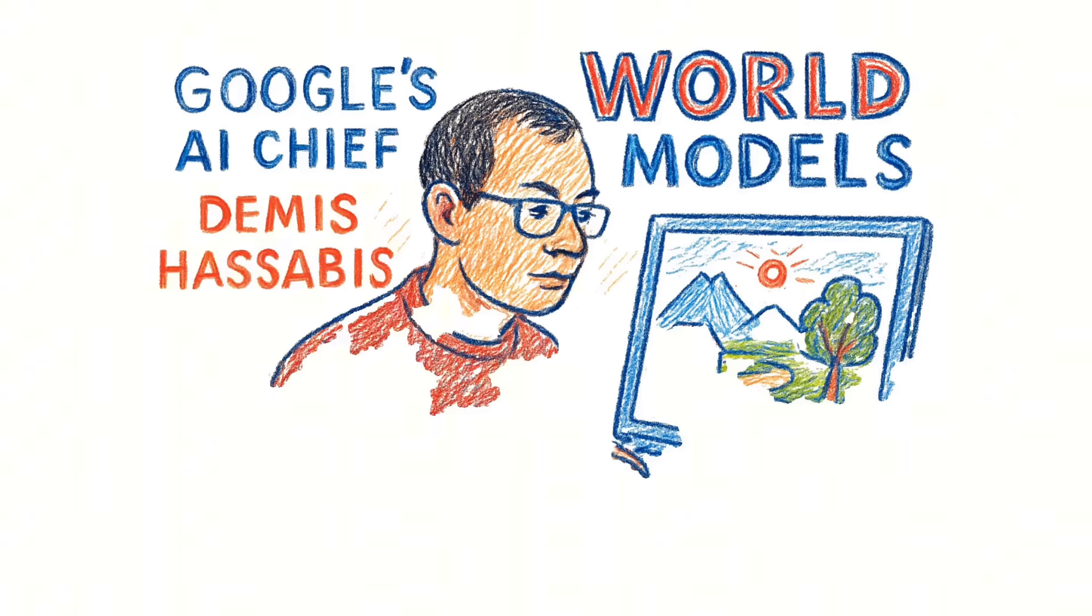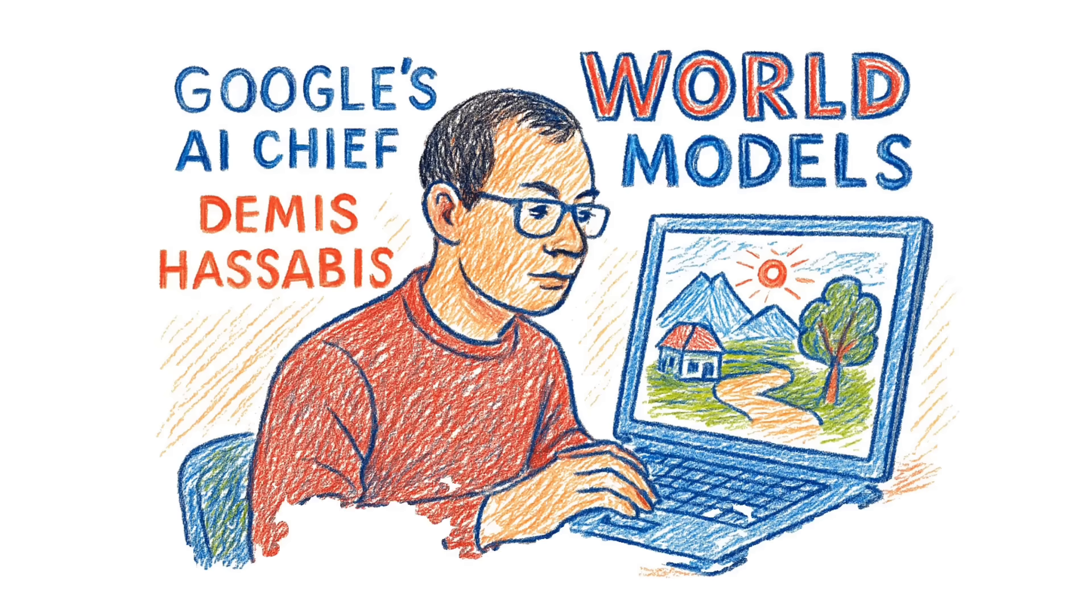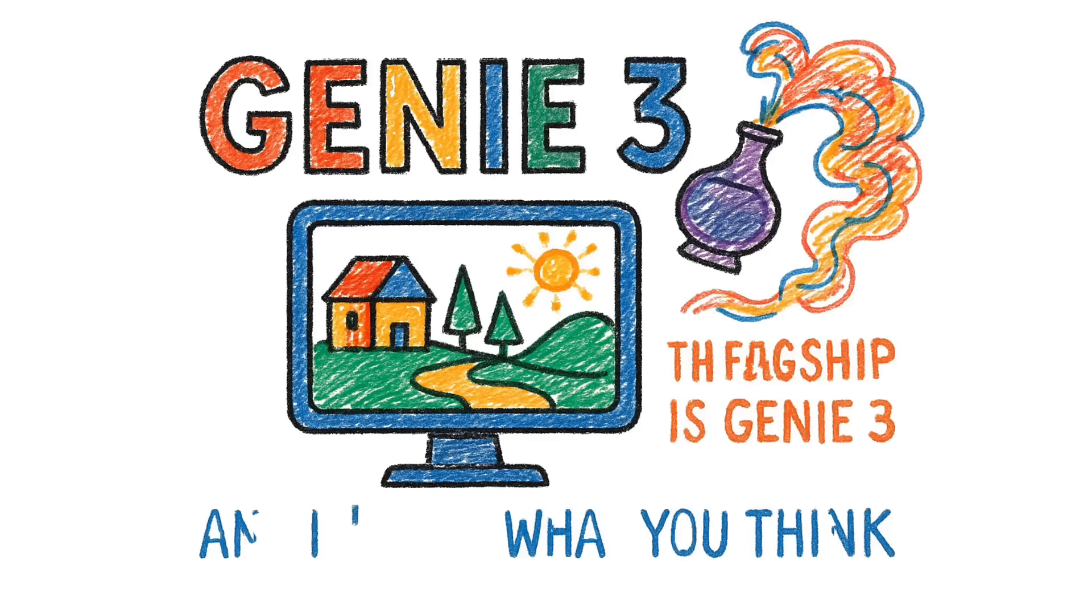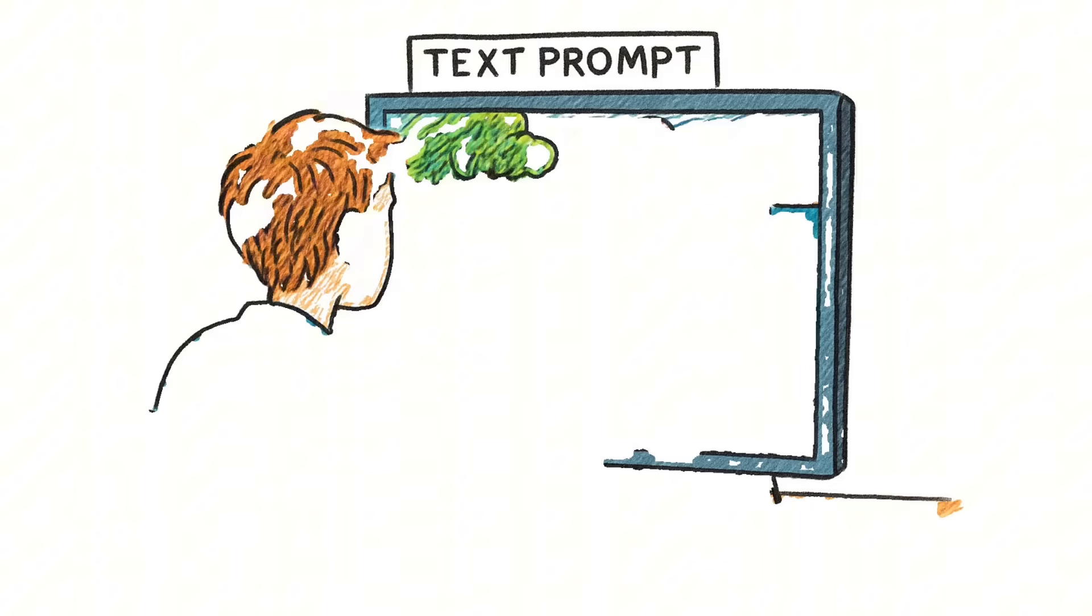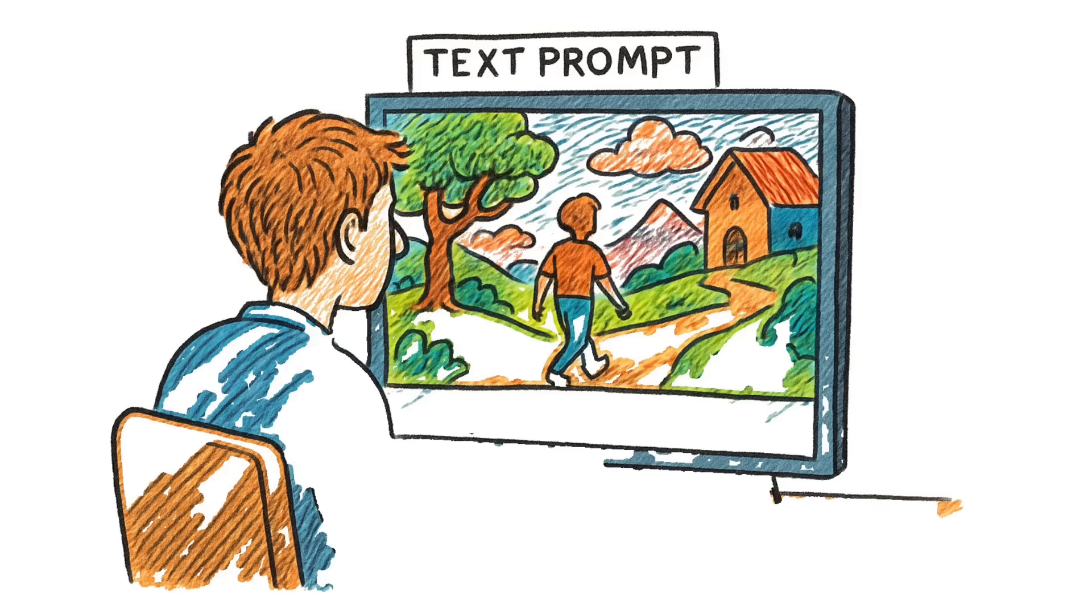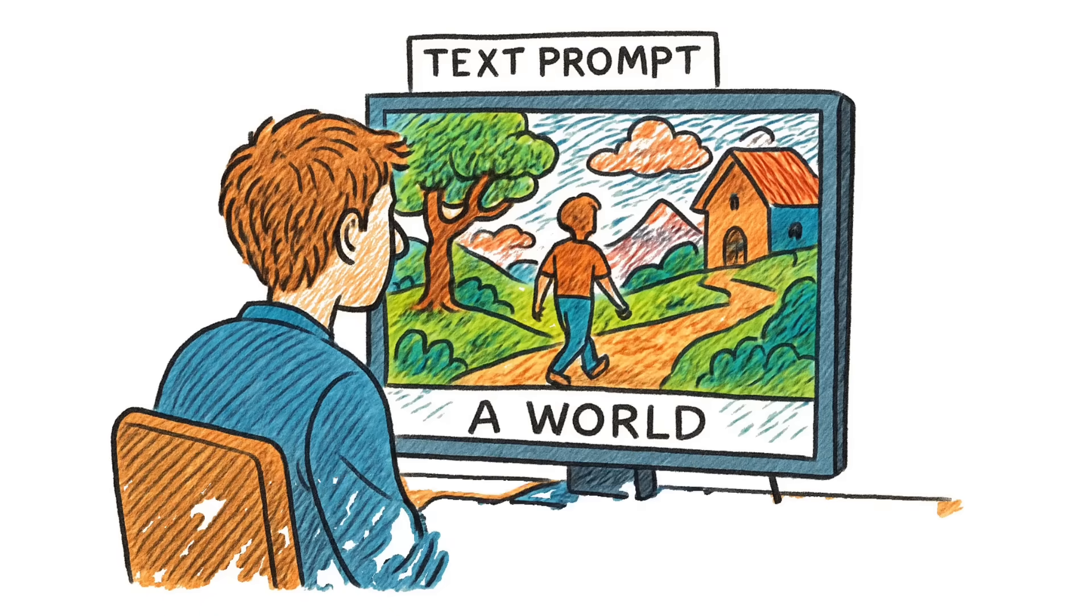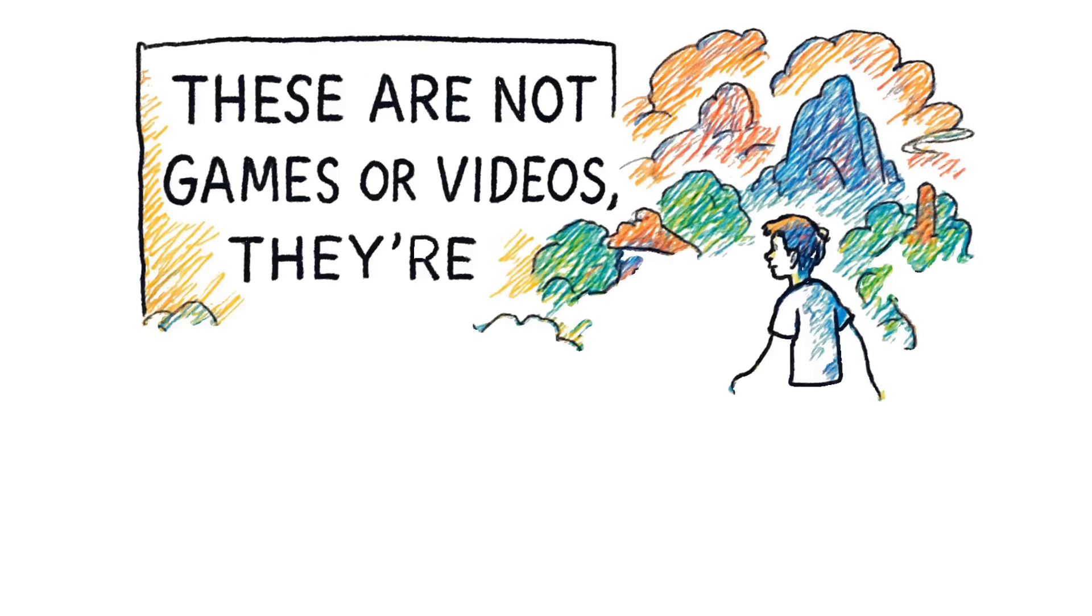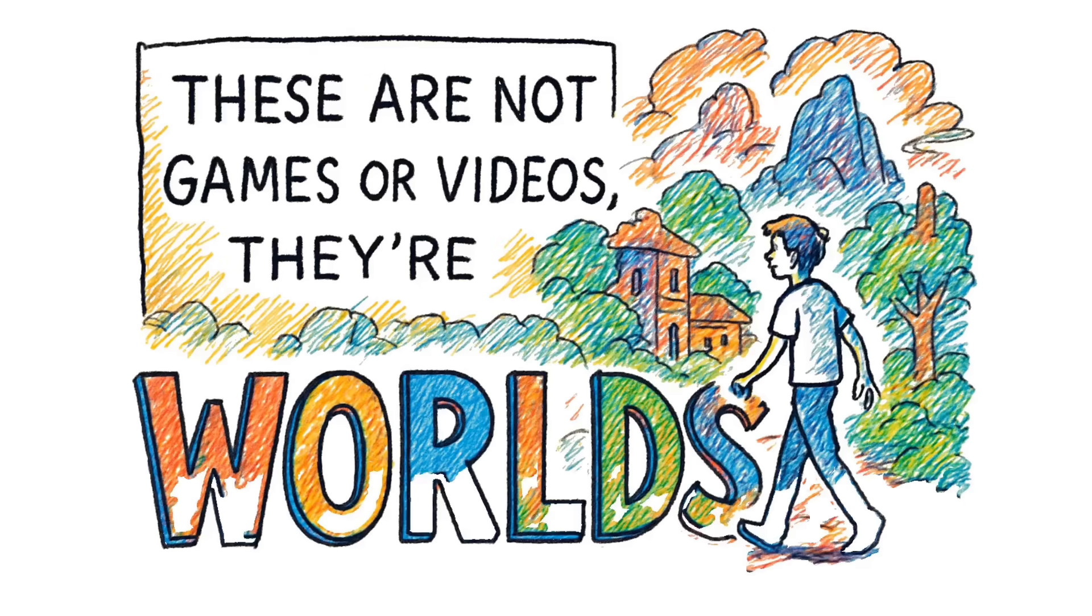Google's AI chief, Demis Hassabis, is personally working on something called World Models. The flagship is Genie 3, and it's not what you think. You type a text prompt, but instead of getting an image or a video clip, you get a world. A world you can walk inside and explore in real time. Google's own words are, these are not games or videos. They're worlds.